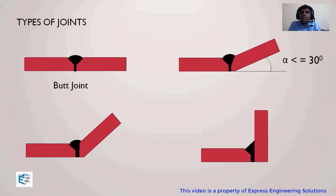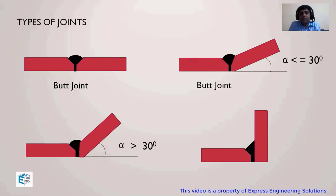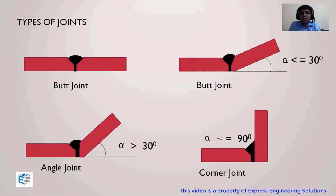Moving to the second figure: unless we know the angle with the horizontal, we cannot answer. If the angle is less than or equal to 30 degrees, it falls under the definition of a butt joint. If angle alpha is more than 30 degrees, it falls under the category of angle joint. The last figure, having an approximate angle of 90 degrees, falls under the category of corner joint.